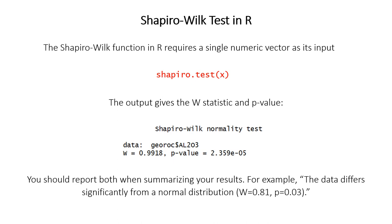And you should report both of these values when summarizing your findings in writing. For example, you could write a sentence like this, where you would say it either differs significantly, or it doesn't differ significantly from a normal distribution. So that's all for now. Now, you don't often need to specifically test for normality, but if you do, the Shapiro-Wilk test is a good way to do it.